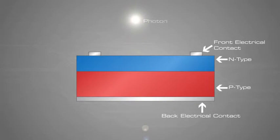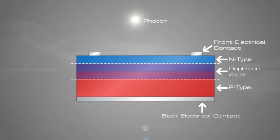Light travels in packets of energy called photons. The generation of electric current happens inside the depletion zone of the P-N junction.